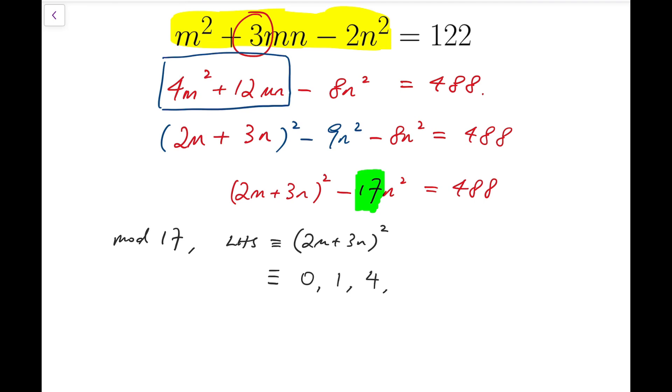3 squared, which is 9, 4 squared, which is 16, 5 squared is 25, and that's 8 mod 17, 6 squared is 36, and that's 2 mod 17, 7 squared is 49, that's 15 mod 17, 8 squared is 64, and that's 13 mod 17.